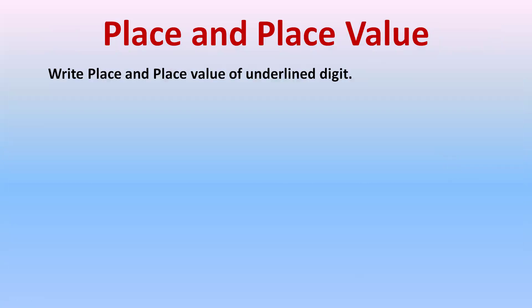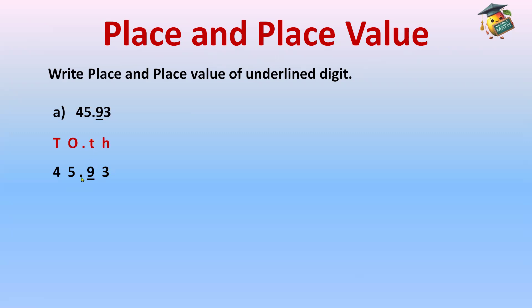Now let's go to place and place value. The question is: write the place and place value of the underlined digit. We have the number 45.93. Before solving, let's write the place value chart above the digits. Leave a little space between the digits so I can write the places above them. Above the decimal we write 'decimal'; before decimal: ones (capital O), tens (capital T); after decimal: tenths (small t, small h), hundredths.